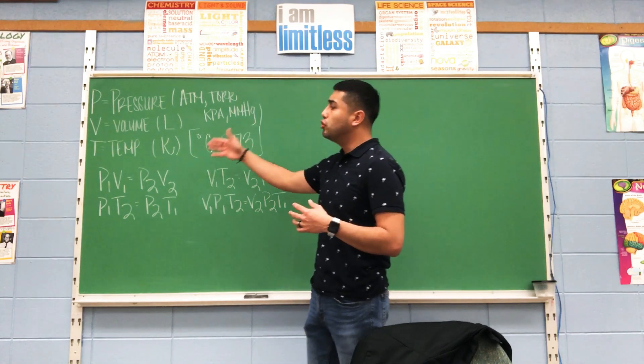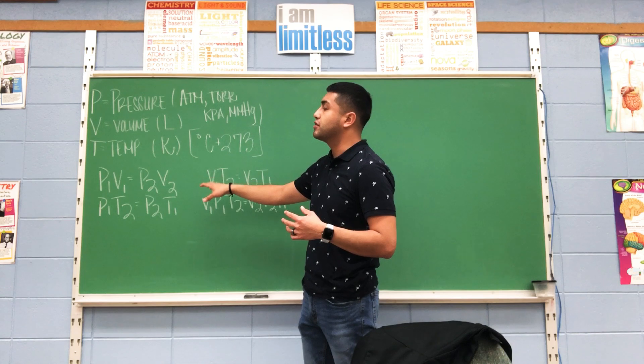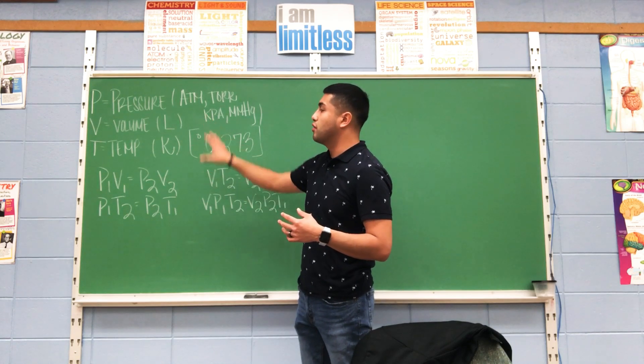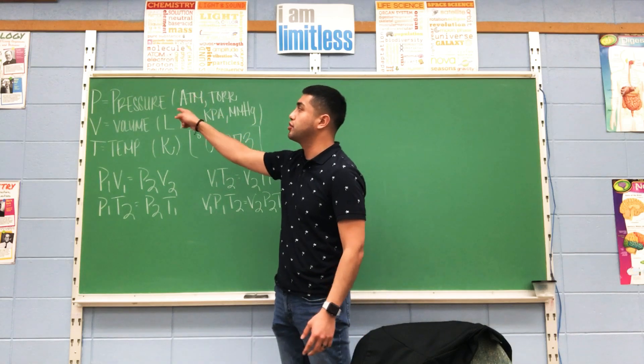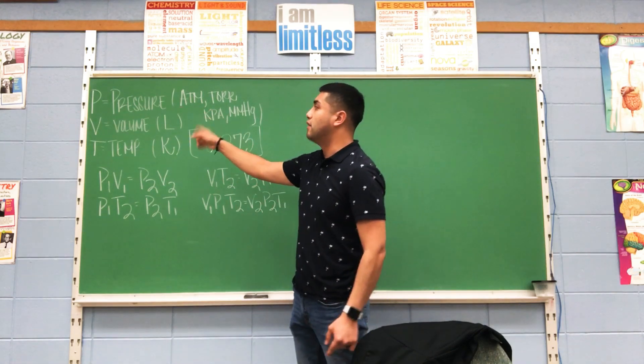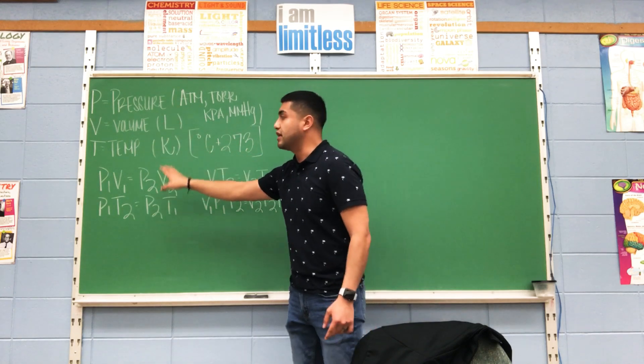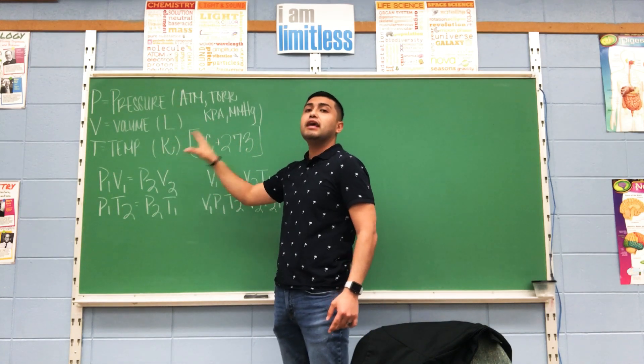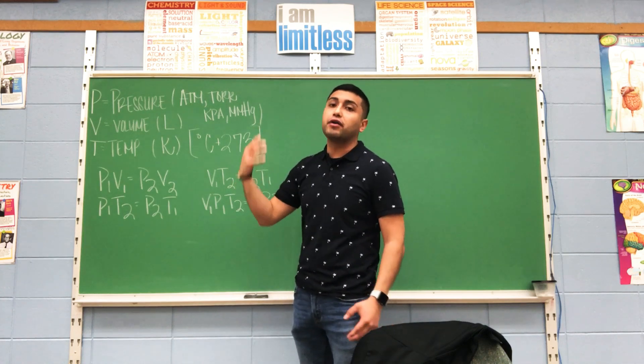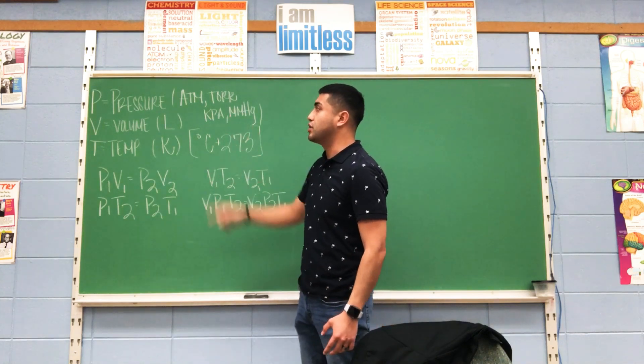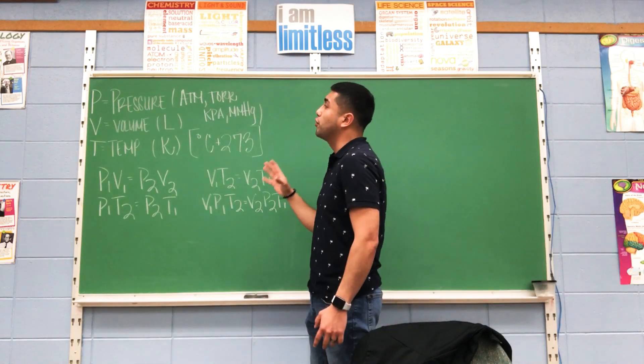As a reminder, your gas laws have different variations, but you will see the same letters. For instance, these four have the same three letters. You'll notice that pressure is P, volume is V, temperature is T. When you're using that, P is always pressure, V is always volume, T is always temperature for your gas laws.